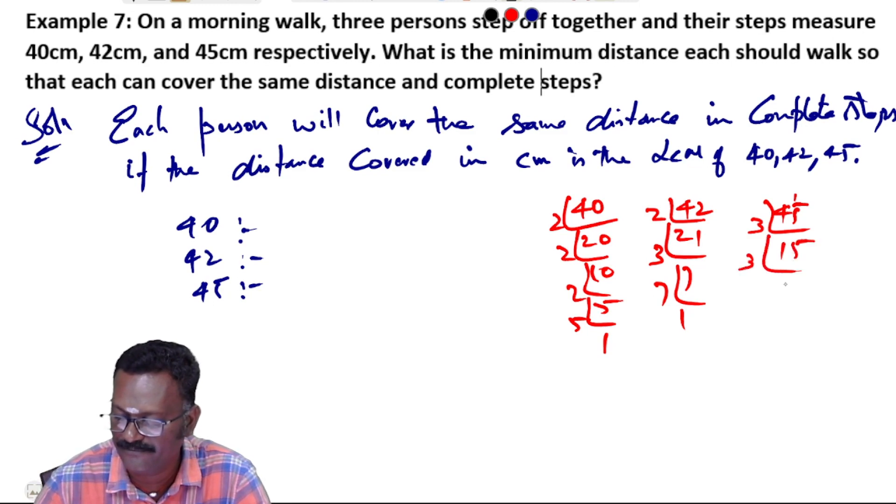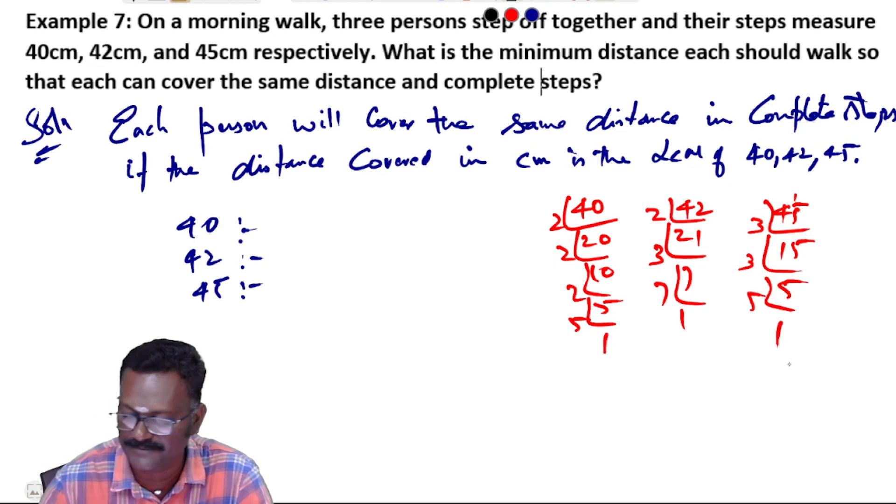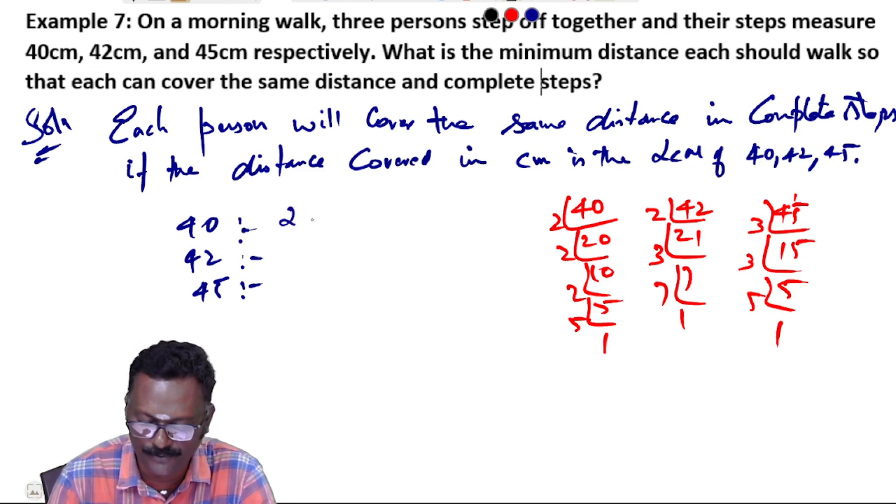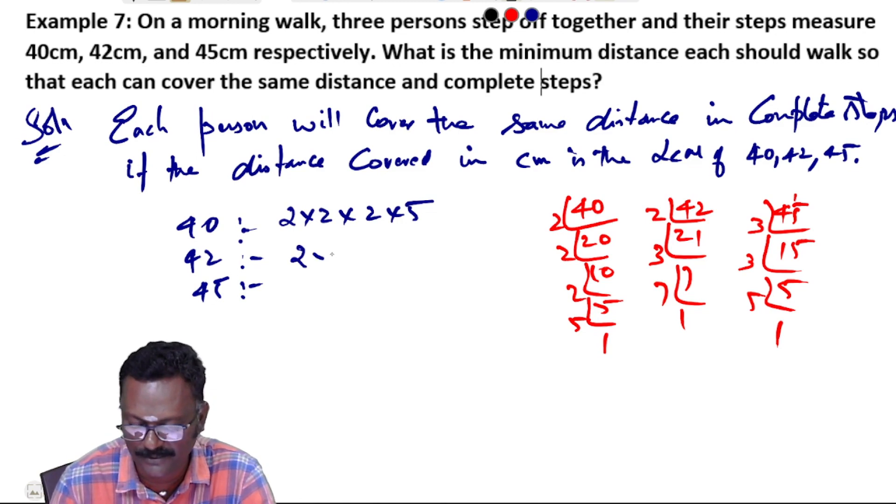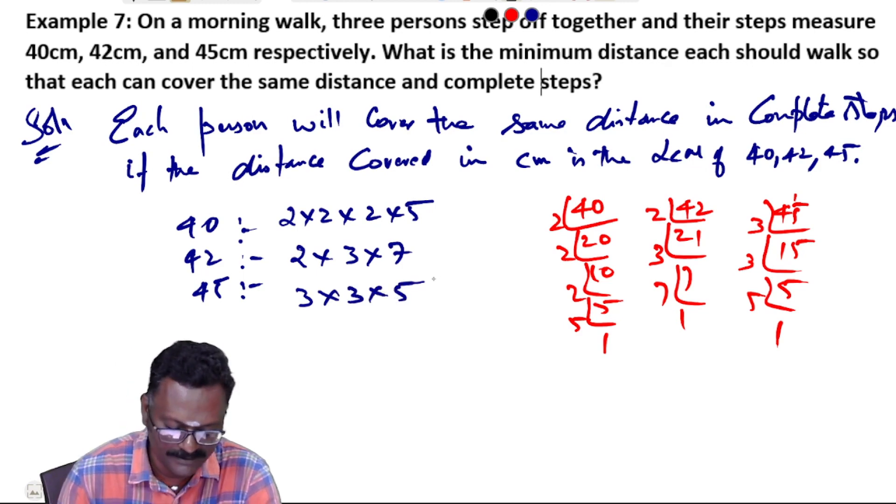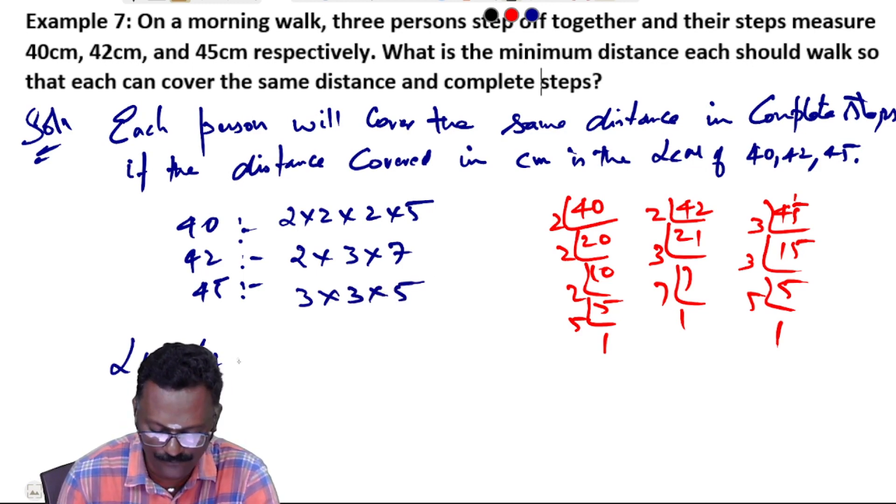So 40 is 2 into 2 into 2 into 5. 42 is 2 into 3 into 7. 45 is 3 into 3 into 5. Now LCM of 40, 42, and 45.